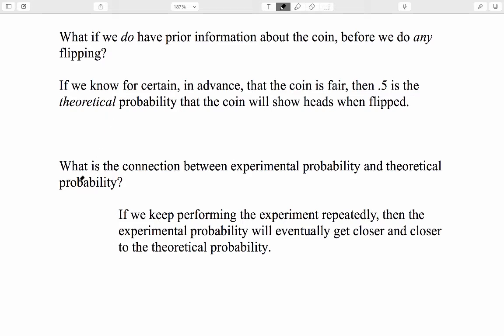Now, what is the connection between these two notions, experimental probability and theoretical probability? The connection, the crucial connection, between experimental probability and theoretical probability is that if we keep performing the experiment repeatedly, then the experimental probability will eventually get closer and closer to the theoretical probability, even if it takes a while.